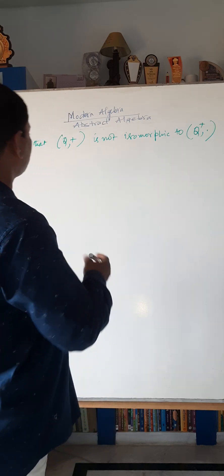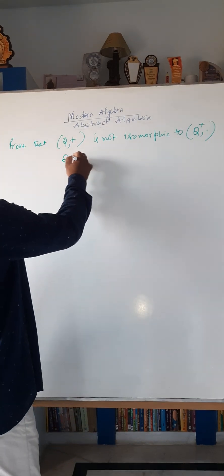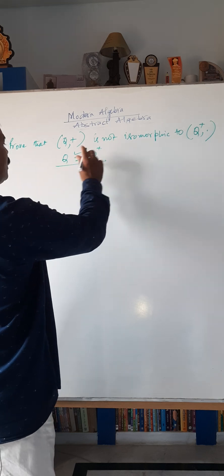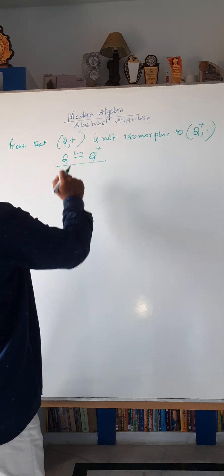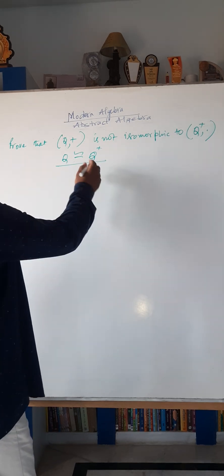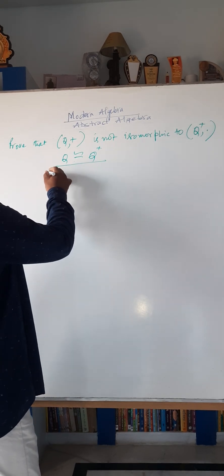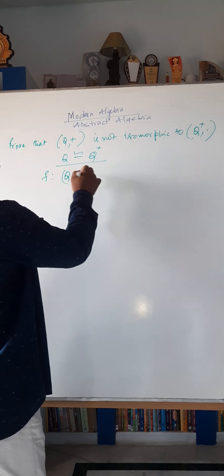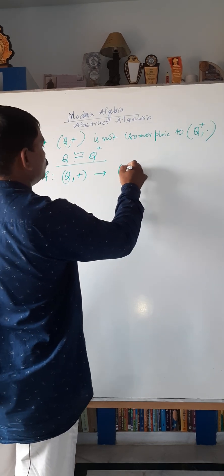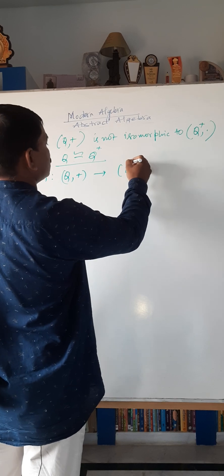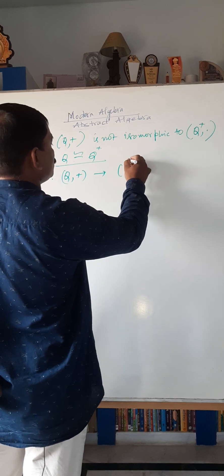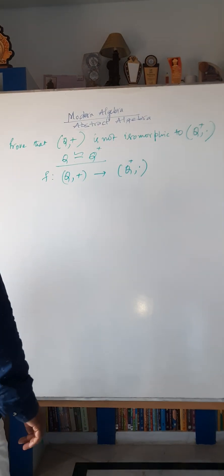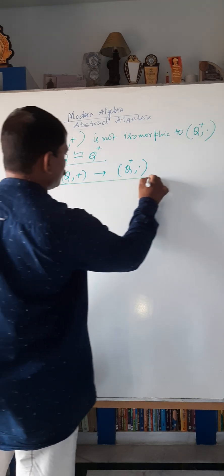If possible, let Q and Q⁺ be isomorphic. Then there exists an isomorphism f from Q⁺ to the set of rational numbers with respect to multiplication.